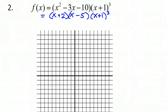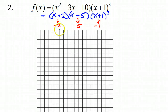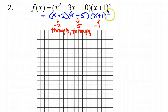So here are my zeros. Based on the factors, my zeros are at negative 2, positive 5, and negative 1. At negative 2 it should go straight through. At 5 it should go straight through. But at negative 1, because it's a triple, it should be an inflection. So: through, through, inflection.